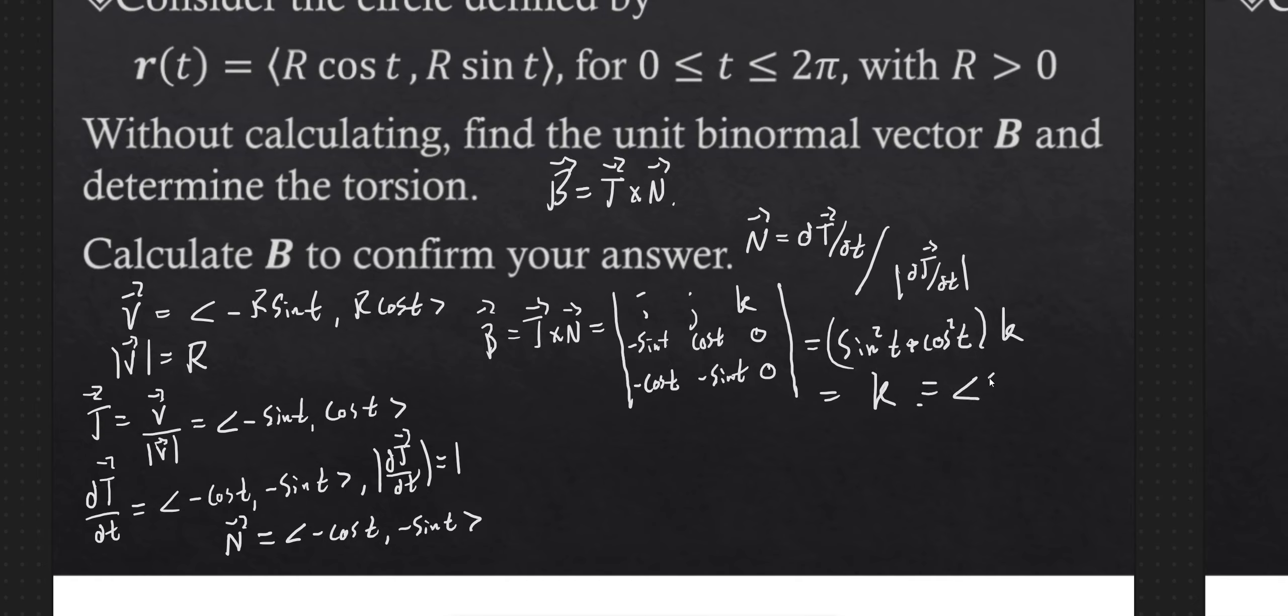Or if we want to think about it in component form, our unit binormal vector is zero, zero, one. And that matches up with our prediction. So that's cool.